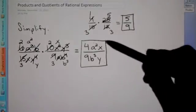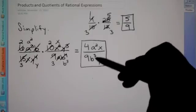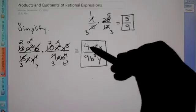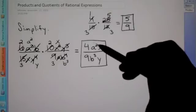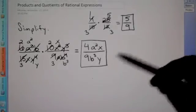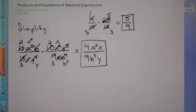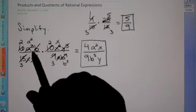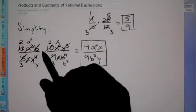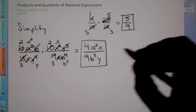Something to note: if you're ever left with the same variable on top and bottom, you're not done yet — there's still more to be able to reduce. This is how you do a problem where you have to multiply fractions with variables.